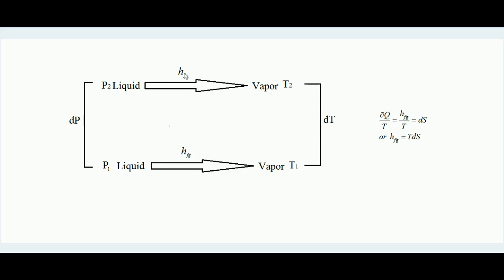You might ask: why is HFG kept the same in both cases if pressure is changing? The reason is that for a small pressure change, the increment in latent heat addition is so small that we can disregard it. So for a small pressure change from P1 to P2, the latent heat required for phase change remains essentially the same — only the saturation temperature changes from T1 to T2.